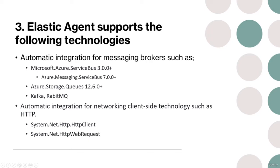Elastic Agent supports many technologies out of the box. Automatic integration is available for messaging brokers such as Microsoft Azure Service Bus starting from version 3.0 and newer, and another service bus starting from version 7 and newer. Azure Storage Queues are supported starting from version 12.6.0 and newer.